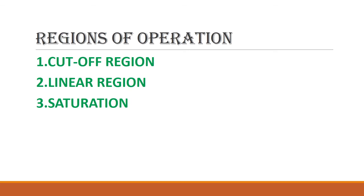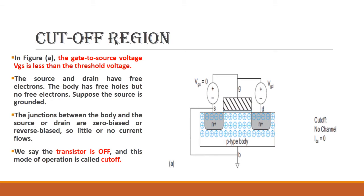There are three regions of operation: cutoff, linear, and saturation. In the cutoff region, the gate-to-source voltage VGS is less than the threshold voltage or VGS equals zero. No channel is formed, so no current flows from drain to source. The transistor is in the off state. VGS and VGD are voltage notations; the voltage between gate and source is VGS, gate and drain is VGD.